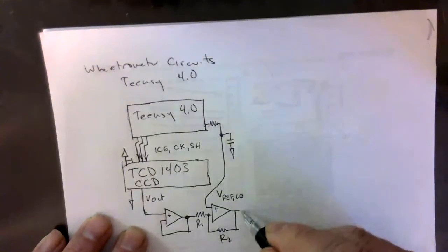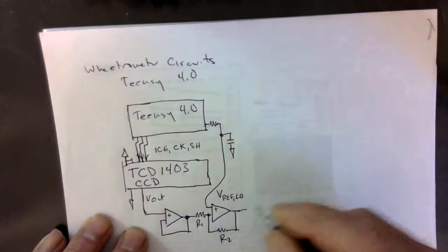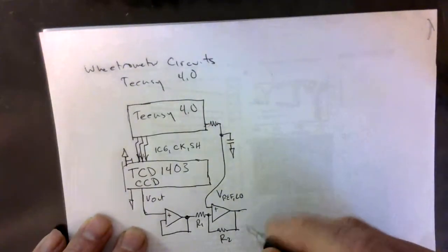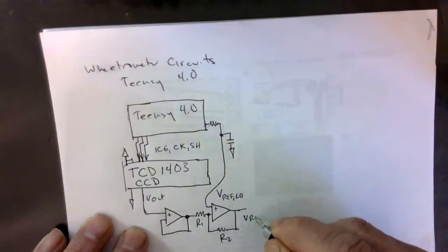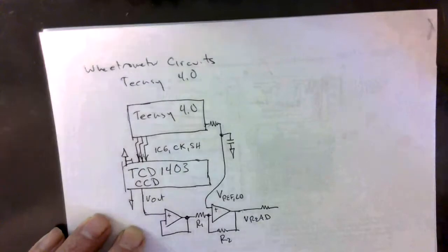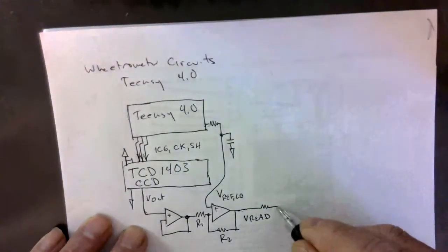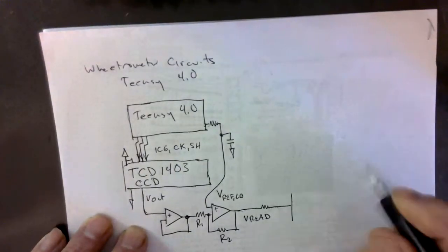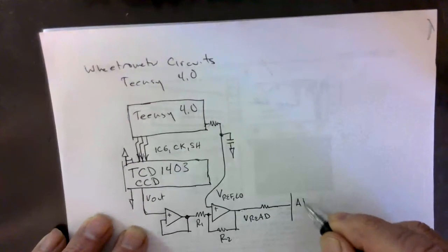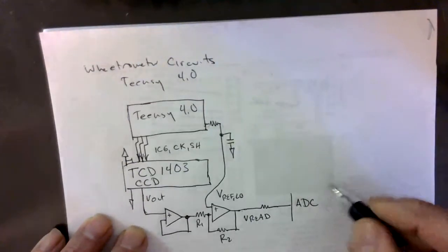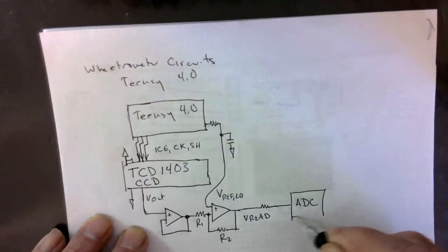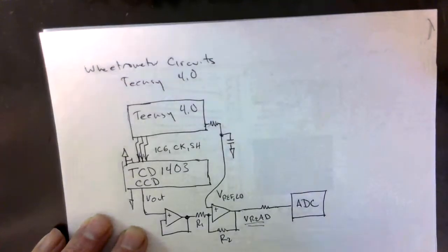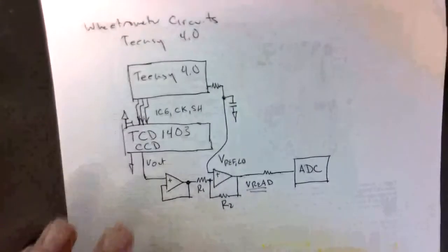After that, we have, let's call this V read. V read goes through a resistor for no real obvious reason and then it goes into our A to D converter. The A to D converter is going to read the voltage there.